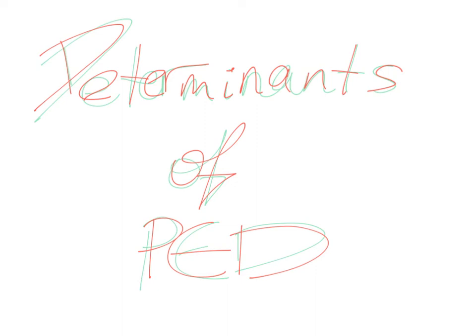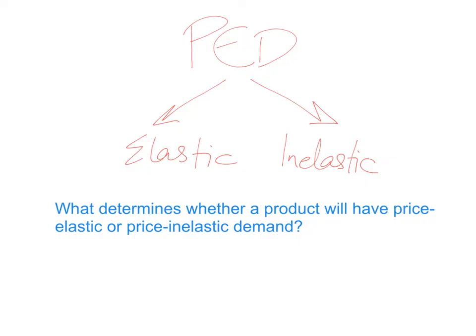This video will introduce and explain the determinants of price elasticity of demand, the determinants of PED. We've learnt in a previous lesson that demand can be price elastic or price inelastic. But what determines whether a product will have price elastic or price inelastic demand? What factors determine whether consumers will be very sensitive to changes in price? Let's have a look and see.